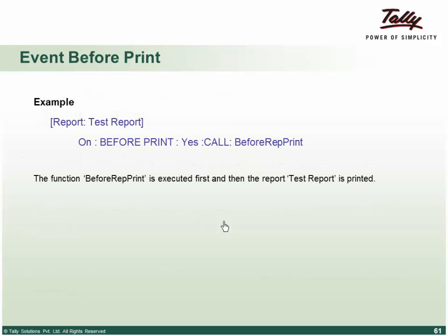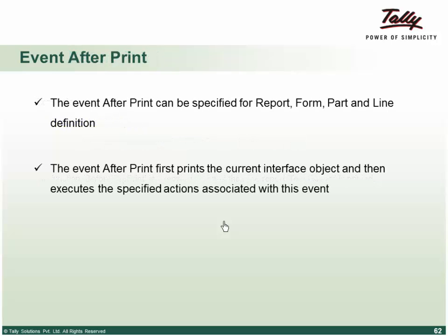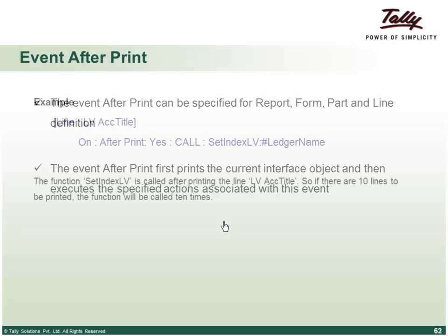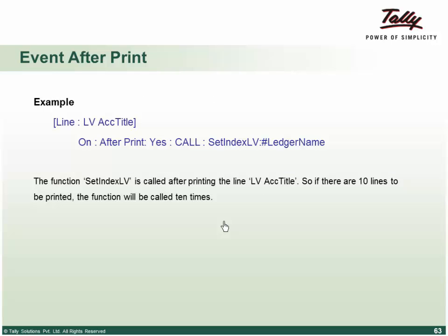An example: on before print, call a function which sets the required number of actions. Then we have after print — an event that happens after the printing activity is completed. This can be specified at report, form, part, and line. The after print event first prints the current interface and then executes the specified actions. For example, creating an index page — after print is completed, it pushes values to a list variable, and that is how the index number gets printed.